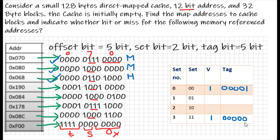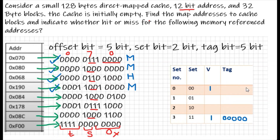No need to change the tag since it matched. For the next address, the set is 00. Comparing the tag: stored tag is 00001 but new tag is 00011, so they don't match — it's a miss. On a miss, we update the tag. The new tag is 00011.